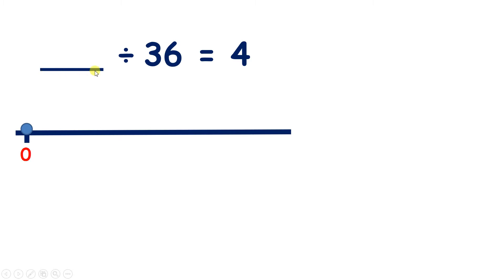Now we have something divided by 36 equals 4. So now pause the video and see if you can find the missing number. We can answer this missing number division by using the inverse operation, by multiplying 36 and 4.